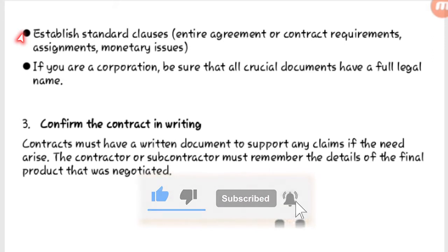Under basics, you should establish standard clauses — those clauses that apply as standard and must always be there. For example, clauses about monetary issues: the price, contract payment, who is going to pay and how much the contractor will be paid. Also, if it's a corporation, be sure that all crucial documents use the full legal name.